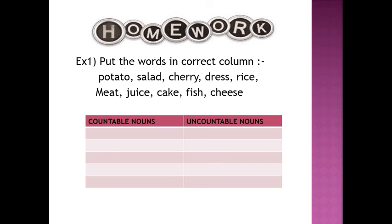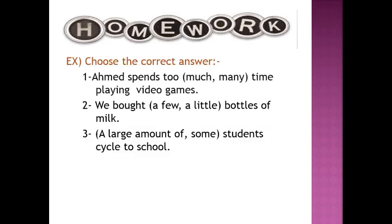Now children, it's time for your homework. Here are two exercises. Number one: put the words in the correct column — potato, salad, cherry, dress, rice, meat, juice, cake, fish, cheese. Number two: choose the correct answer — Emil spends too much time playing video games; we bought a few bottles of milk; a large number of students cycle to school. You have to do these exercises on a full sheet. Make your English language file, put all your homework in it, and submit it at school. Hope you enjoyed this lesson. Thank you very much.